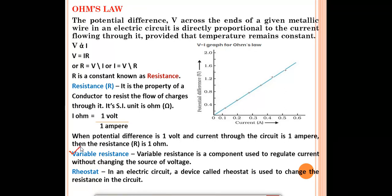Variable resistance is a component used to regulate current without changing the source of voltage. A rheostat is a device used to change the resistance in the circuit. Variable resistance and rheostat are the same — their function is to change the resistance in the circuit.